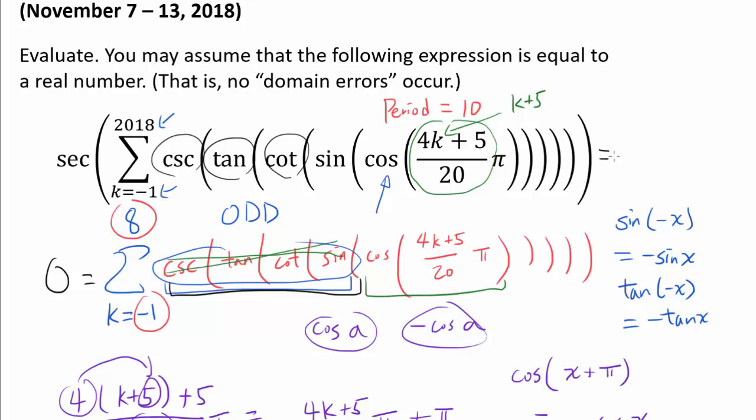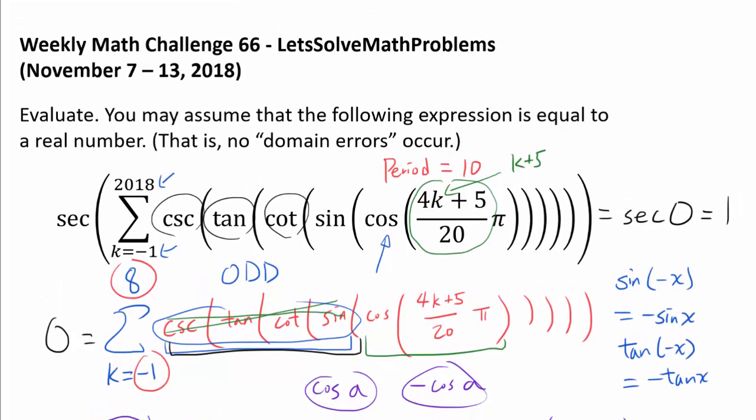And that's telling us that this entire thing is being reduced to secant of 0, which is, of course, 1. We are done.